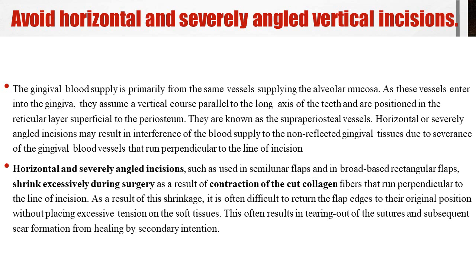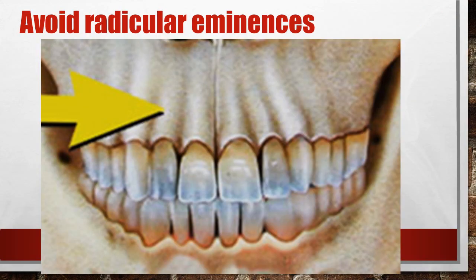Another disadvantage of horizontal and severely angled incisions is that they shrink excessively during surgery because of contraction of cut collagen fibers, which run perpendicular to the line of incision. If you give a horizontal incision, the collagen fibers running parallel to the long axis of the teeth will shrink excessively, making it difficult to re-approximate the flap to its original position without causing tearing or excessive tension — resulting in scar formation.